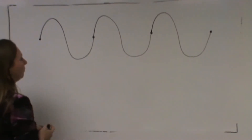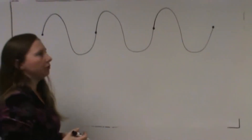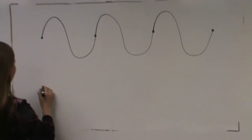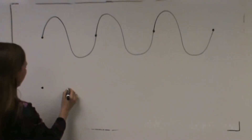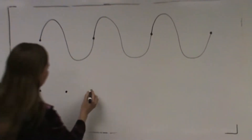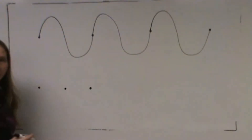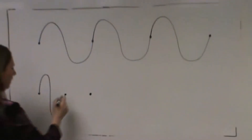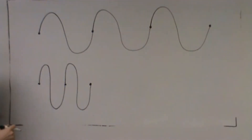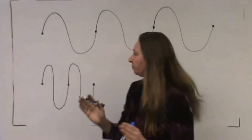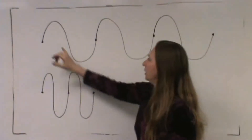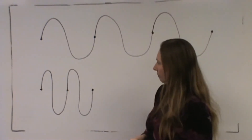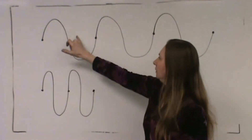Now I'm going to draw a wave with double the frequency of this original wave. From here to here I'm going to need to make one wavelength, but from here to here I'm going to have two wavelengths — we go up and down and up and down. In the same horizontal distance that this wave had one wavelength, this second wave has one, two. It has half the wavelength of this one.